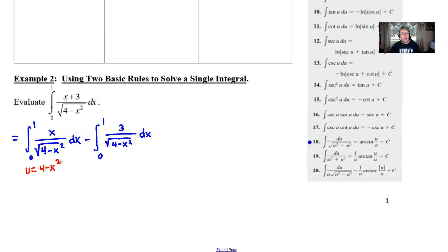U would be that 4 minus x squared, the derivative of which would equal negative 2x dx. Now what we notice is that this x dx that we have in our du expression matches what we have in our integrand. The only thing that does not match is this negative 2.